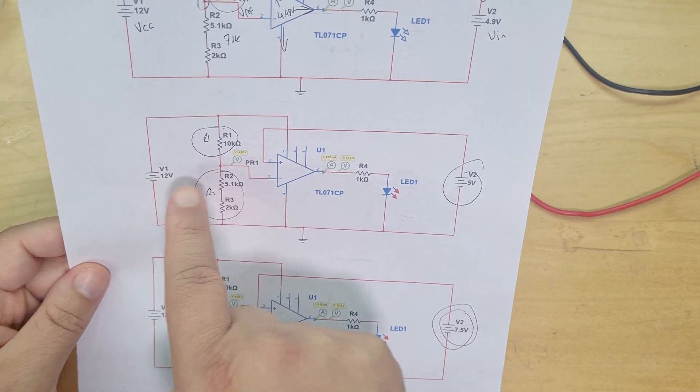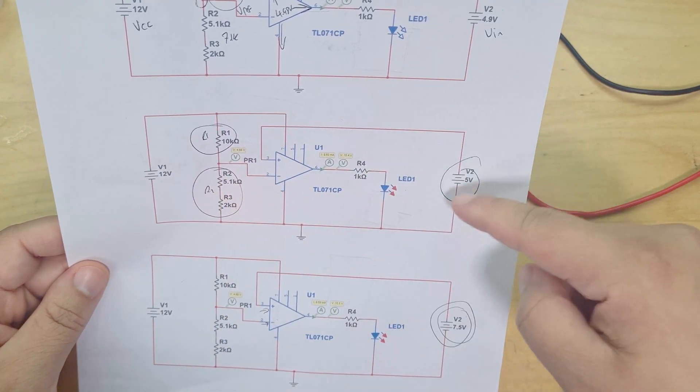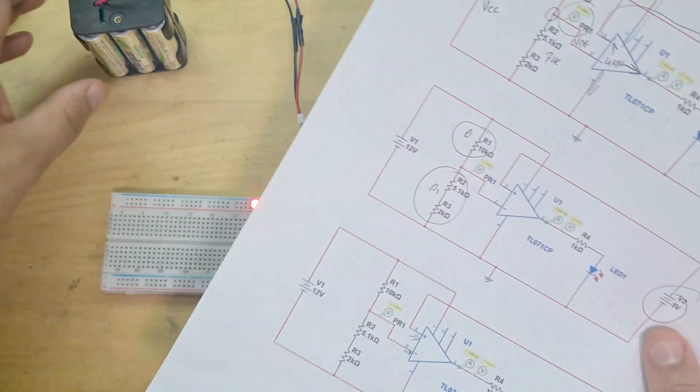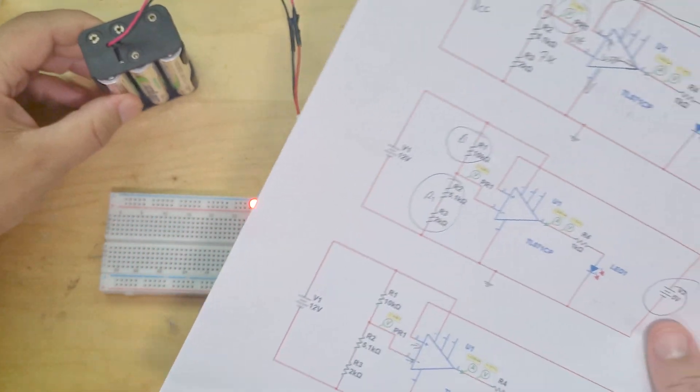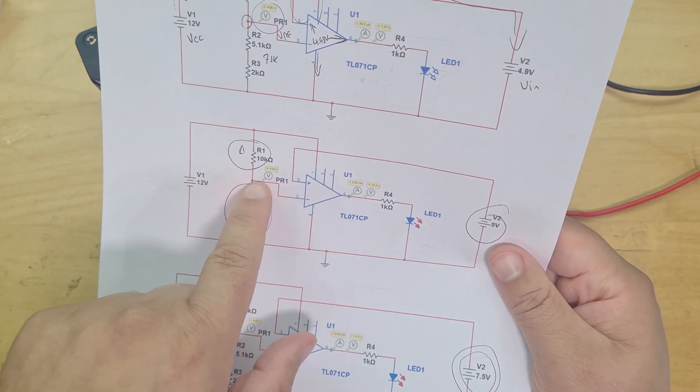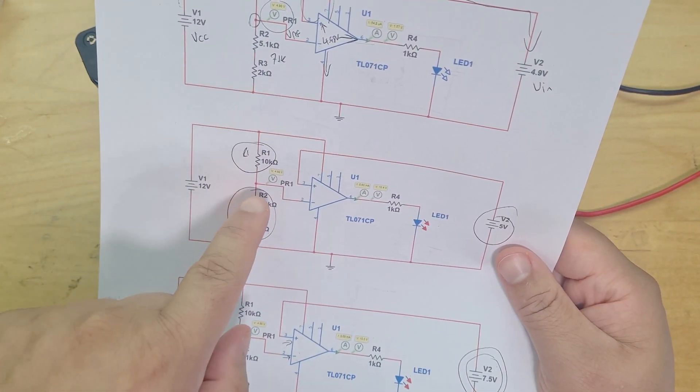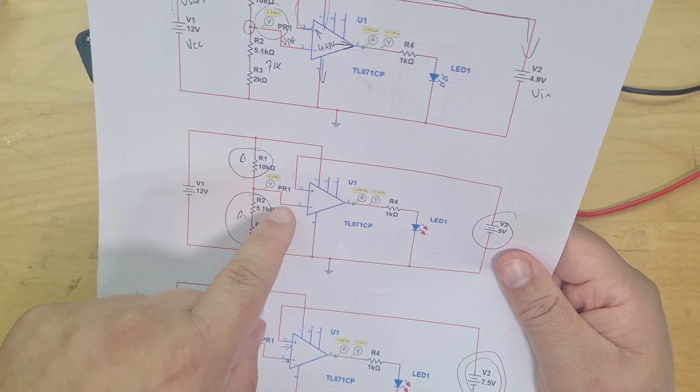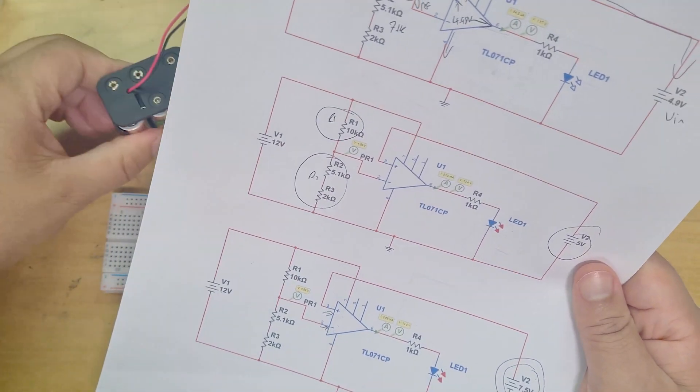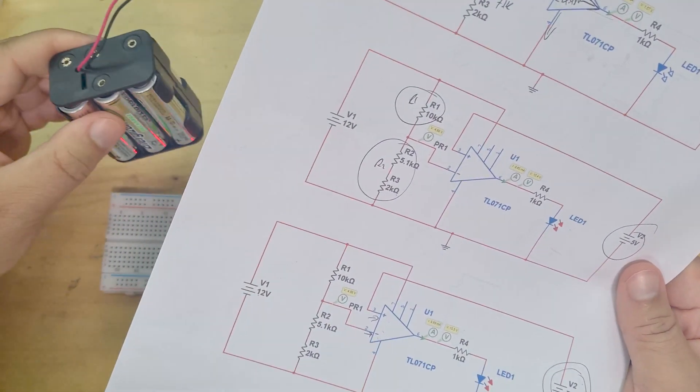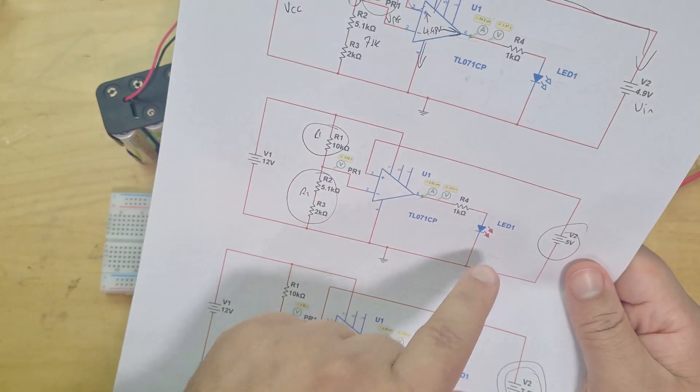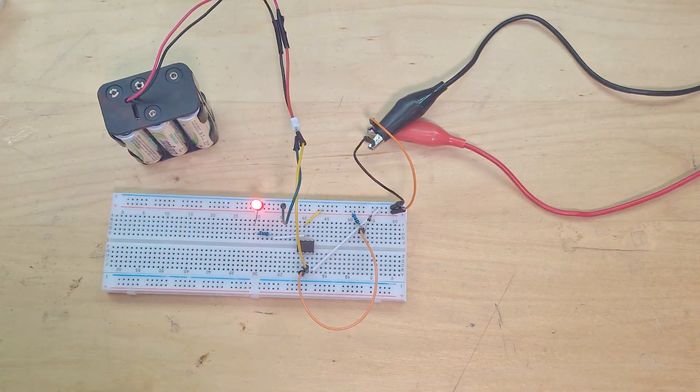Then we used that to compare an input voltage, my 7.5 volt battery, with a 5 volt reference created using a voltage divider network. We compared my battery 7.5 volts to that 5 volts and when the input was higher, turned on the LED.